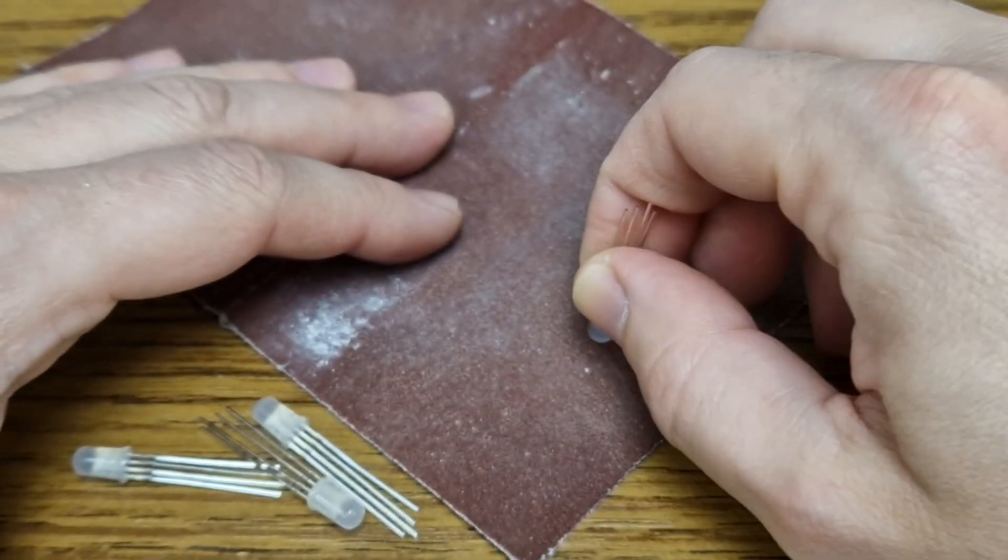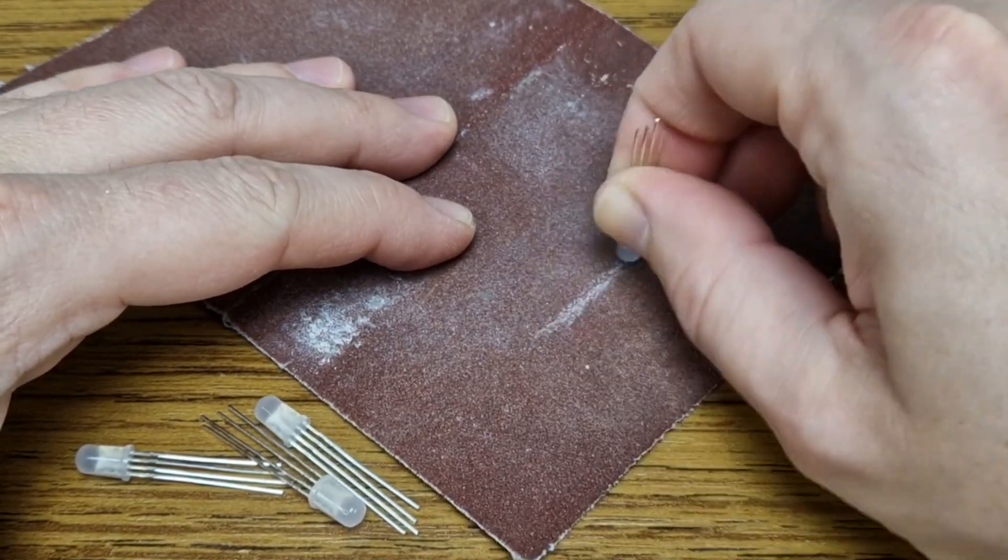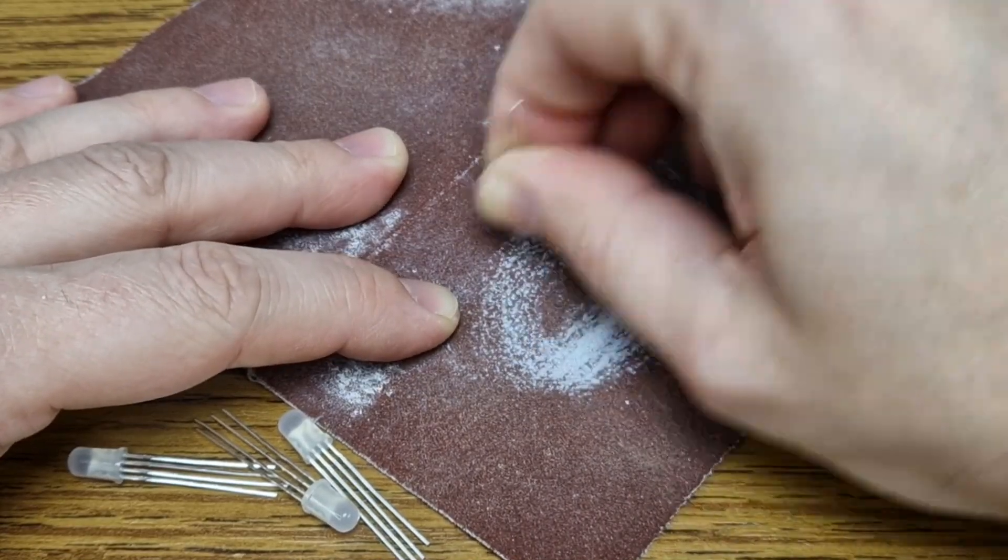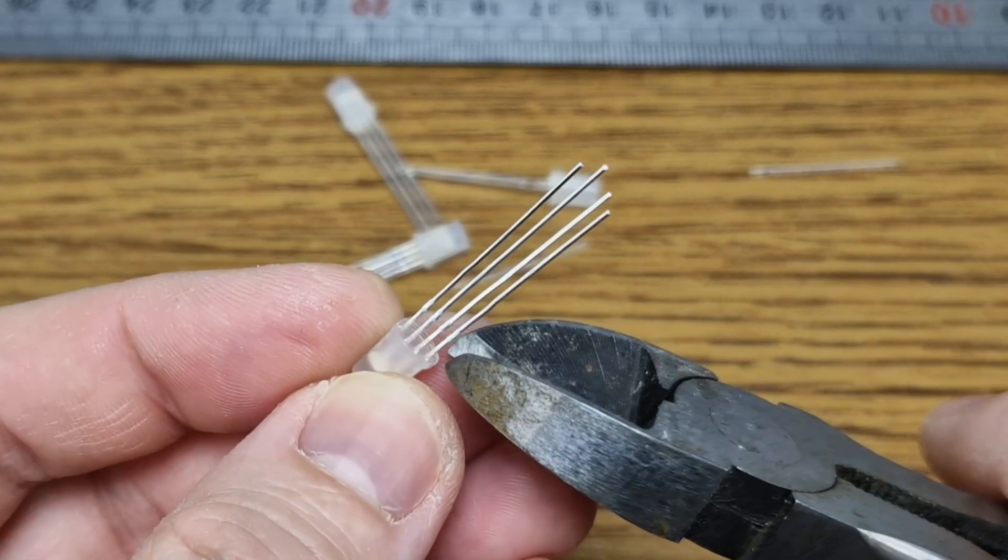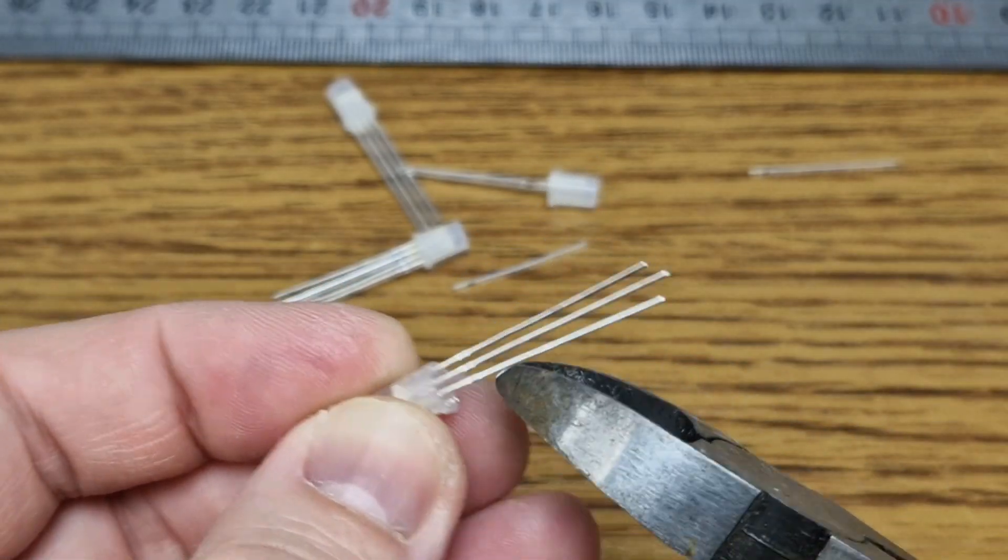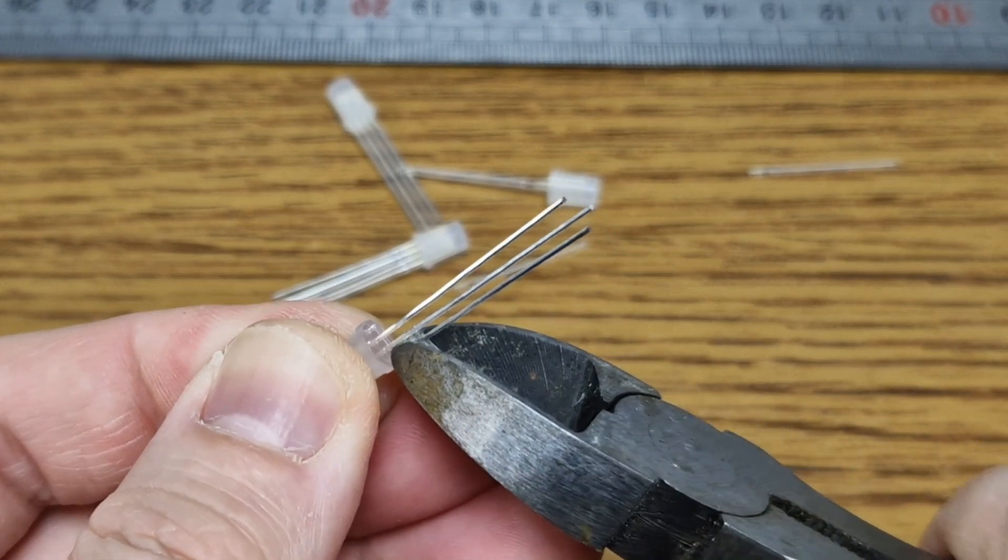But the LEDs have a round head, I will make them flat with some sandpaper. That's better. For this panel, I will use only the green light, so I will cut the 2 unnecessary pins.